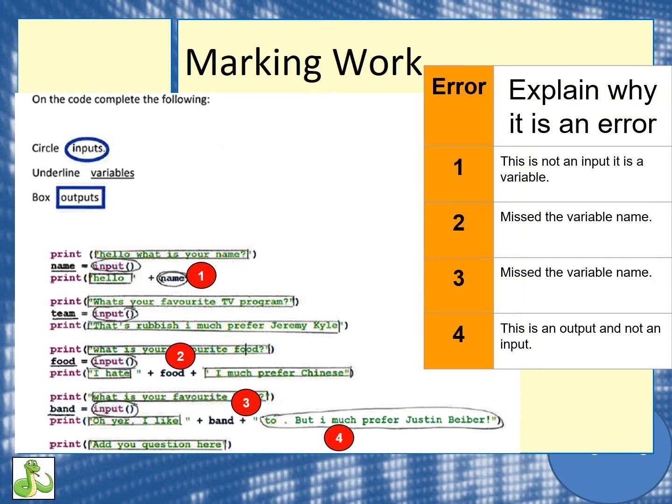Let's have a look at some of the answers. Number one: if we look at name, well this is not an input — remember, an input would say input. Name is our variable. Remember how we used a plus and added our variable afterwards. So number one is that it is a variable and not an input. Number two: the person has forgot to underline that food is actually a variable. Even though we're not typing it in, it's still a variable. And that's the same for number three — they've not underlined that as a variable.